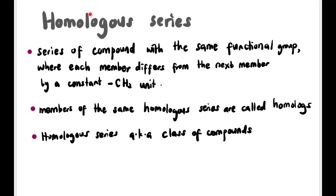The second concept is homolog series. A homolog series is a series of compounds with the same functional group, where each member differs from the next member by a CH₂ unit — a constant CH₂ unit difference. Members of the same homolog series are called homologs, and a homolog series is also known as a class of compounds.